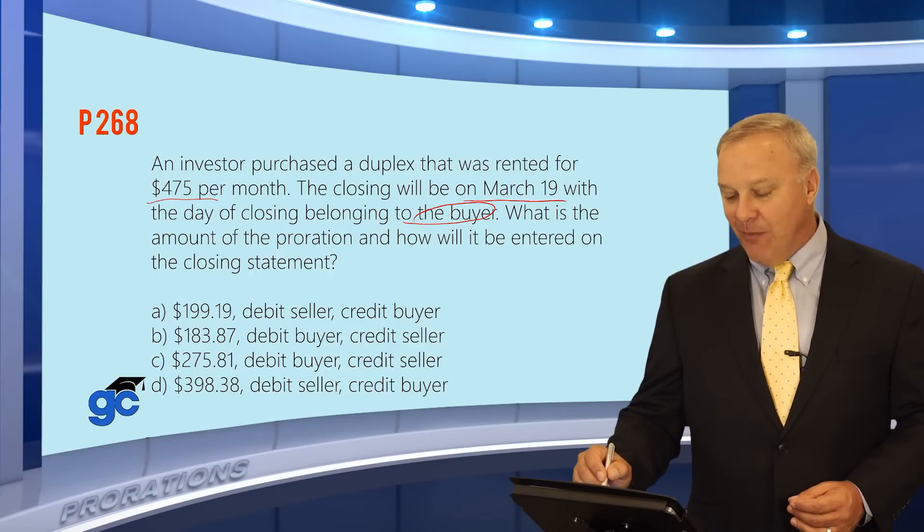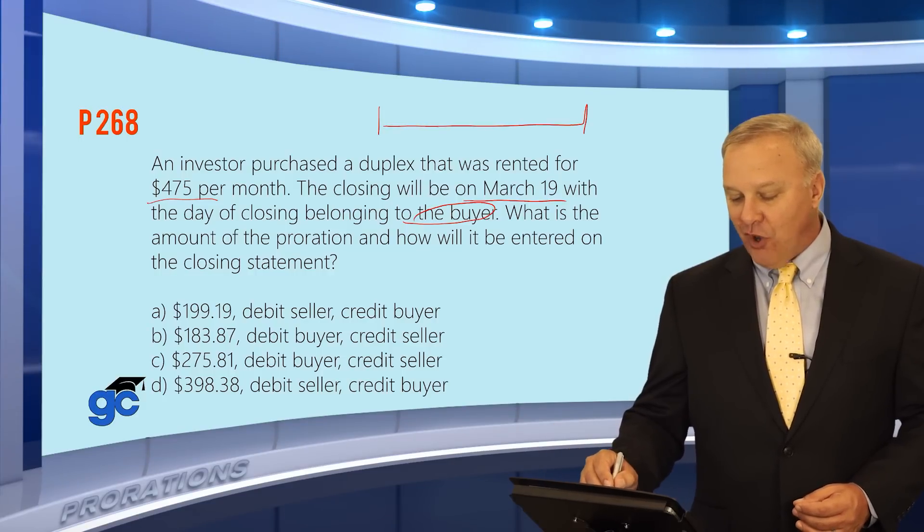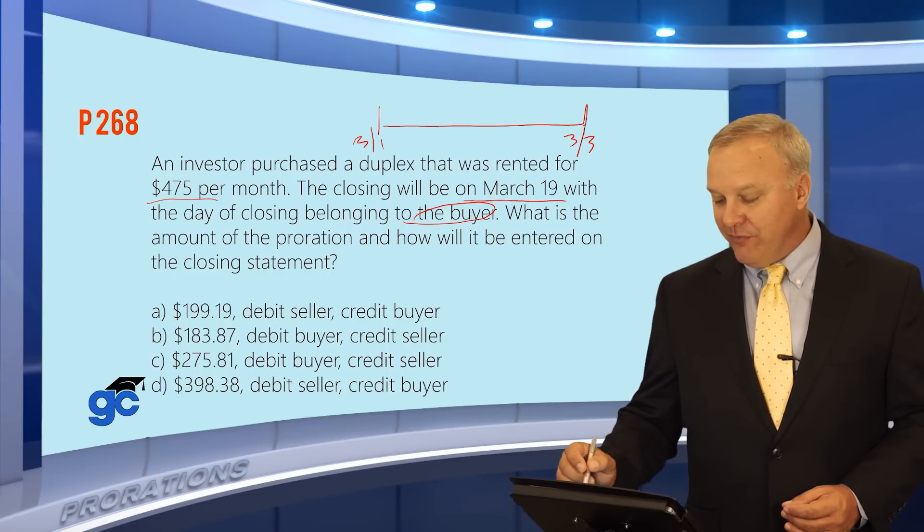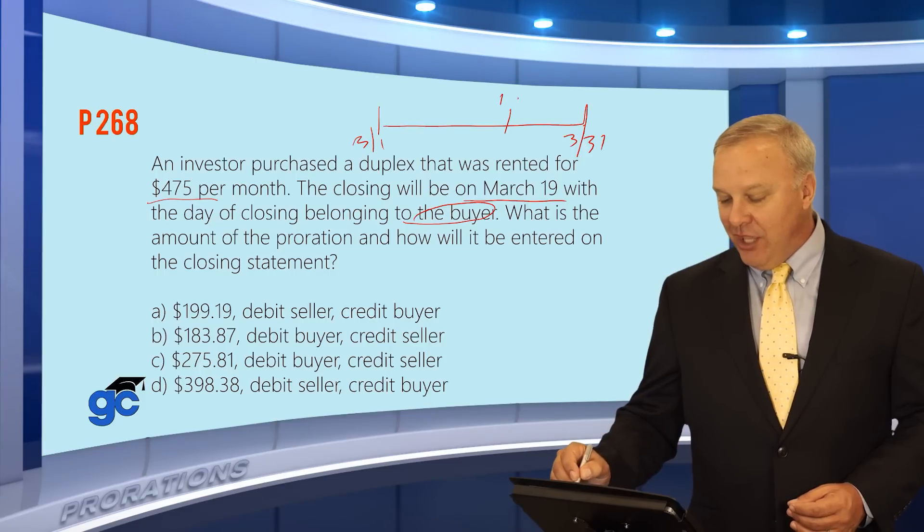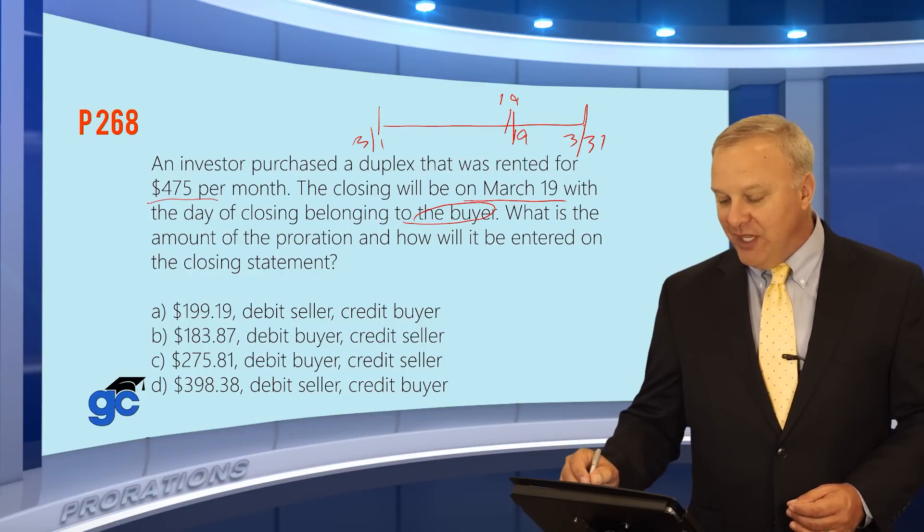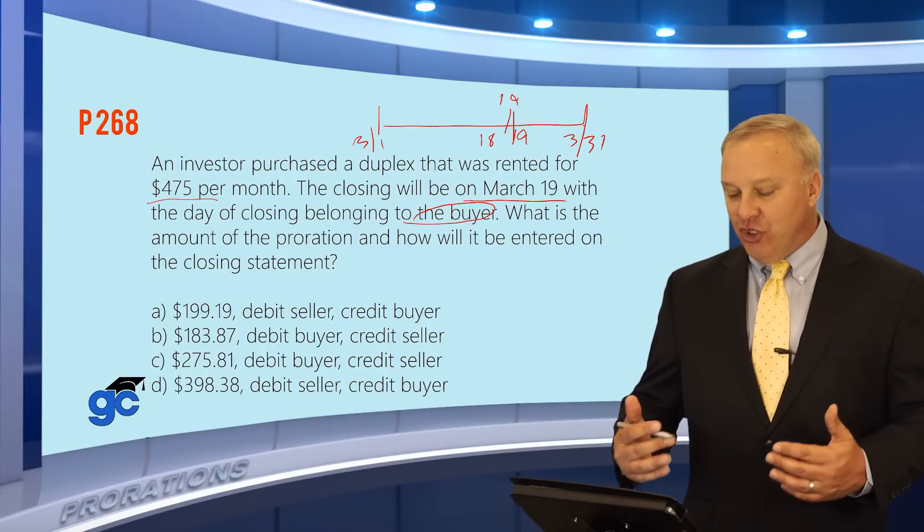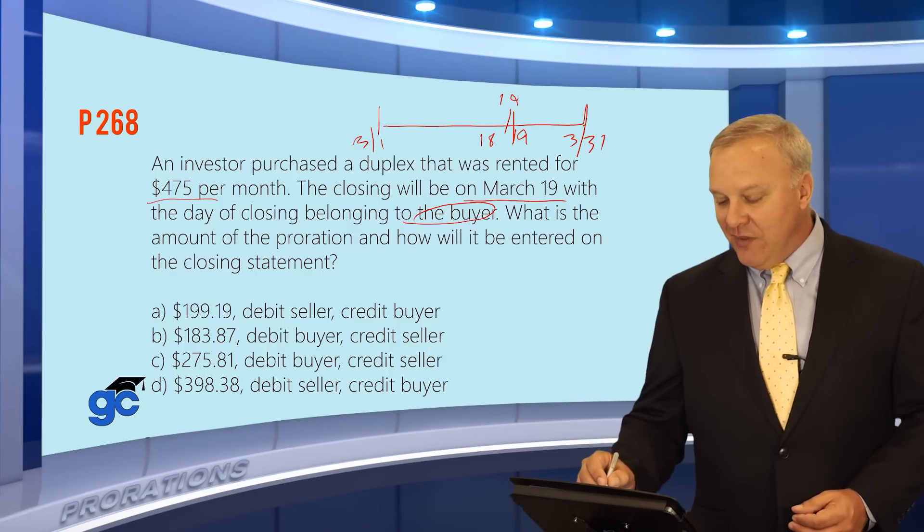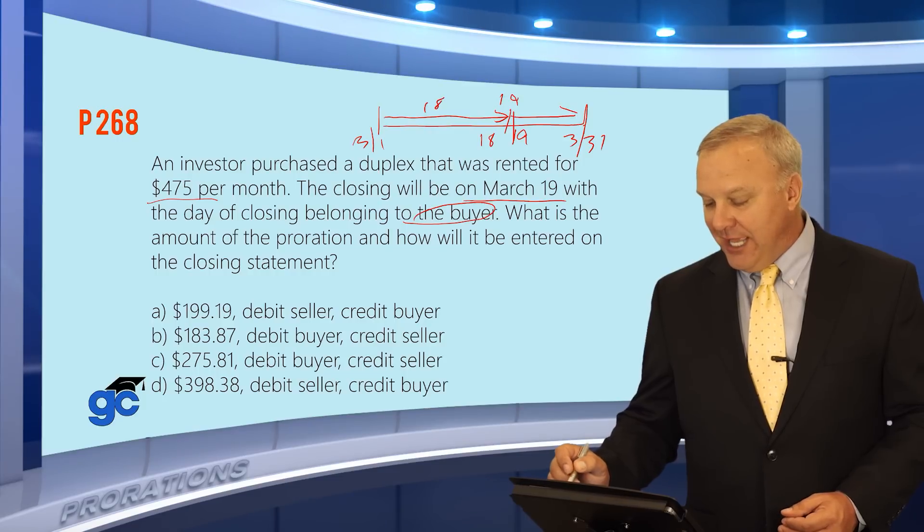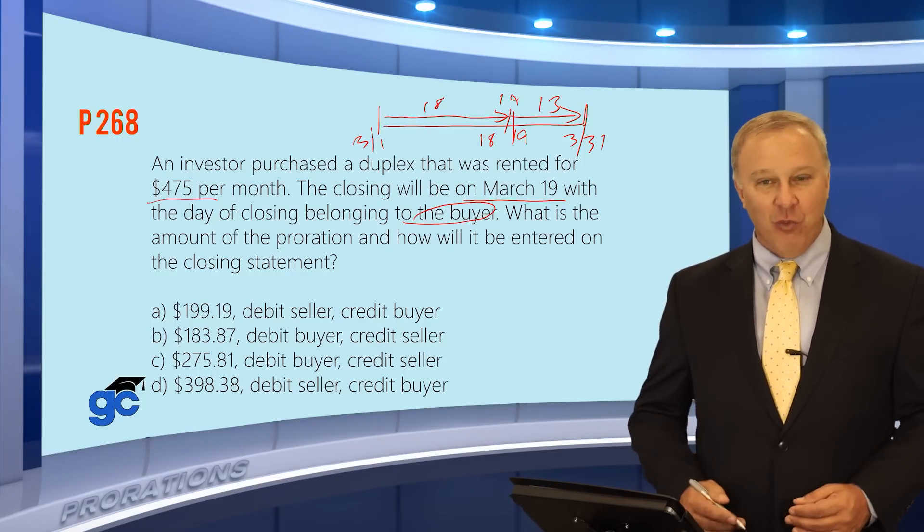If you take a look at this, it is the month of March. I'm just going to draw a little timeline for March. March starts on the 1st and March ends on the 31st. Day of closing is March 19th. You're told in the question that that goes to the buyer's side, which means the last day for the seller was March 18th. So if you look at this just visually, the seller has got 18 days, which means the buyer has got 13 days in the month of March, since there are 31 days.